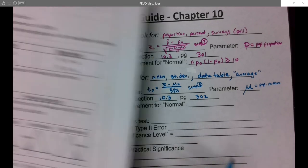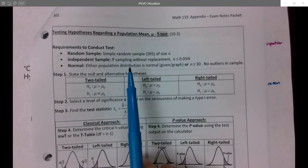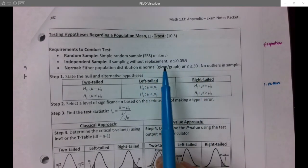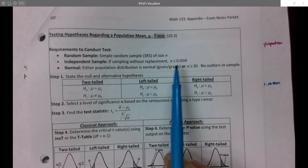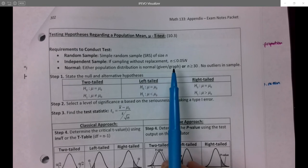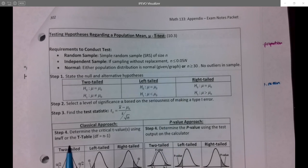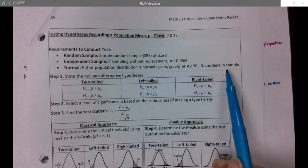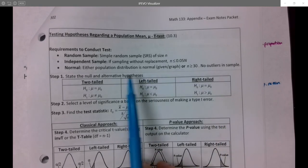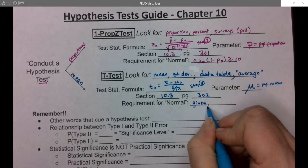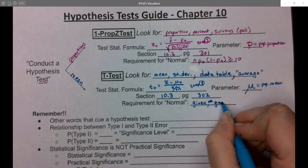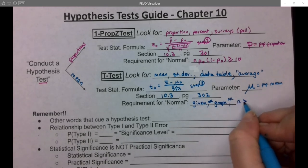The requirement for normal is a bit involved here. You need your distribution to be normal, and it can be given to you in several ways. One is it can just be given—literally written in the instructions. Or you could have a graph, normally a normal probability plot, but it could be a histogram or dot plot. Or n is greater than or equal to 30. You're also supposed to have no outliers, but that's true if it's normal anyway. So it's given, or a graph, or n ≥ 30.